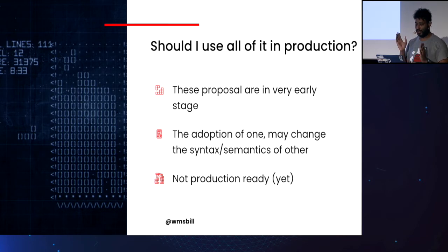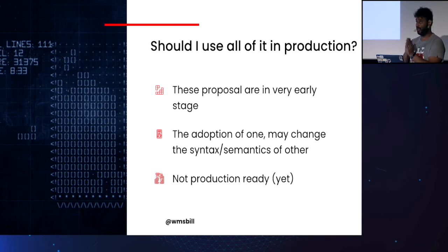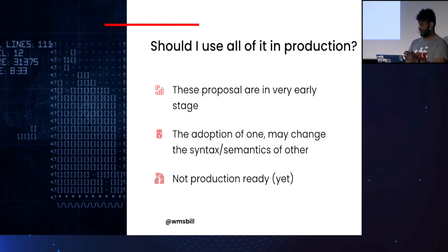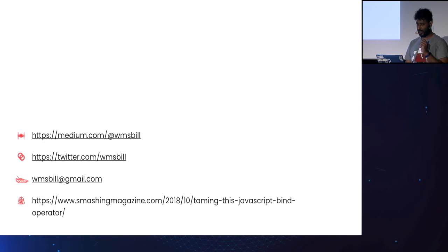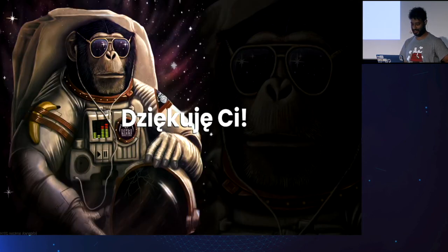Just to wrap it up: should we use all of this in production? These proposals are full of aspects that are still unsettled. The adoption of one may or may not reshape the semantics of another, or could completely remove the other. So the question is: could you use this in production? My answer is — not yet. These are my contacts. I wrote a deeper article on Smashing Magazine about the bind operator and plan to do the same for the other proposals. Thank you!